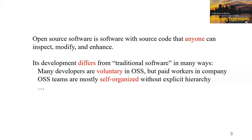First, what is open source software? To put it simply, open source software is software with source code that anyone can inspect, modify, and enhance. It differs from traditional software — basically software developed in companies — in a lot of ways. Two major differences I find particularly interesting: first, developers are volunteers instead of paid workers; and second, developers choose what project they want to work on and self-organize into a group, usually without explicit hierarchy. The self-organization and volunteer nature are the distinct features of OSS.